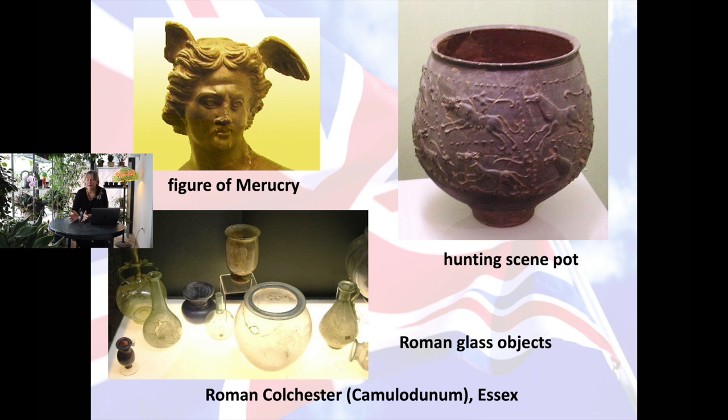We have pottery with some decorative scenes. The hunting scene on this clay pot is actually more Celtic than Roman, but it was used in Roman Colchester. There is Roman glass, so glassworking becomes known in Britain. If you watch Britain BC and Britain AD, they mention at one point that glass objects were for the rich to drink wine, while clay objects were for the poorer sections of society to drink beer — so they tend to be more local in their style of decoration.